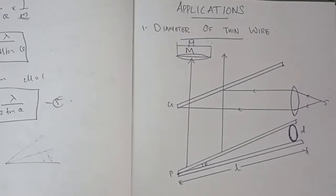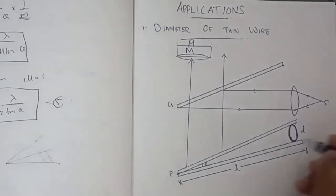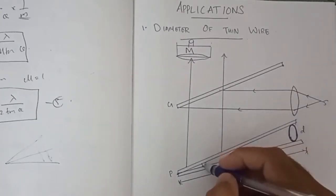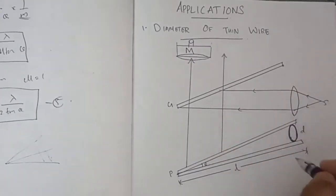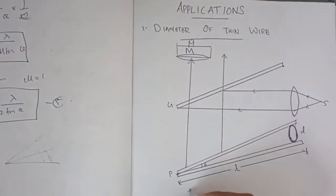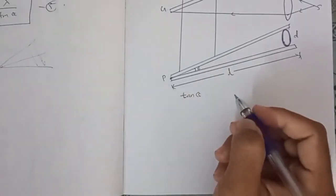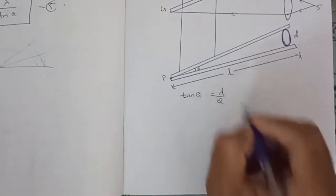Now let's take a look at the diameter of a thin wire. The diameter of the wire is d, and the length is L. The angle is theta. Then we have tan theta, which is opposite by adjacent — that is d by L. So tan theta is equal to d by L.